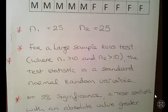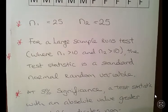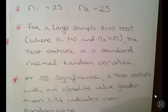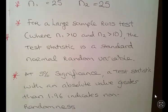the test statistic is a standard random normal variable. So this actually turns into a procedure very like the Z-test that you might learn when you are starting out with statistics. So at a 5% significance level, essentially the test statistic with an absolute value greater than 1.96 indicates non-randomness according to this test.